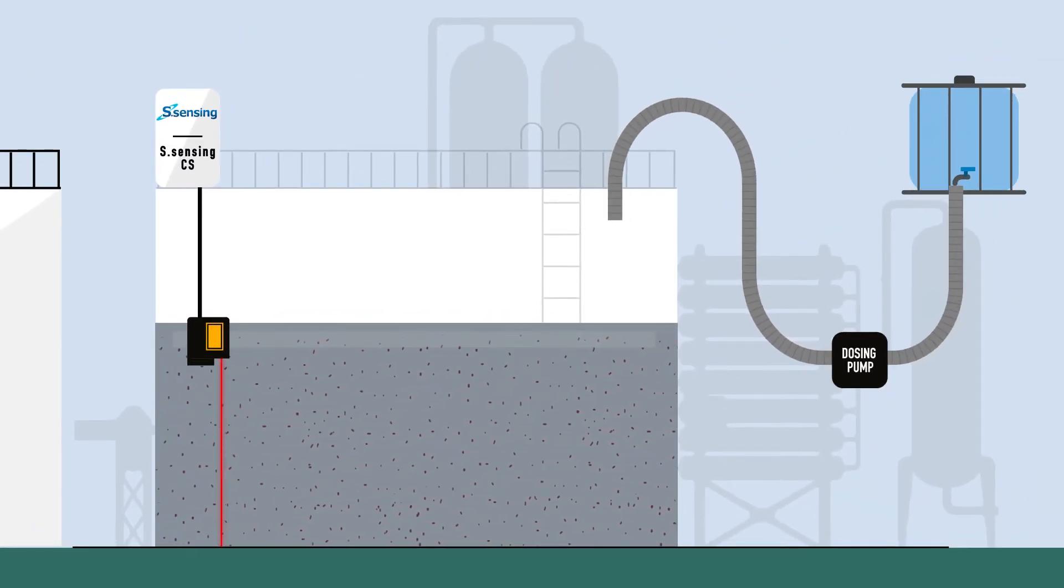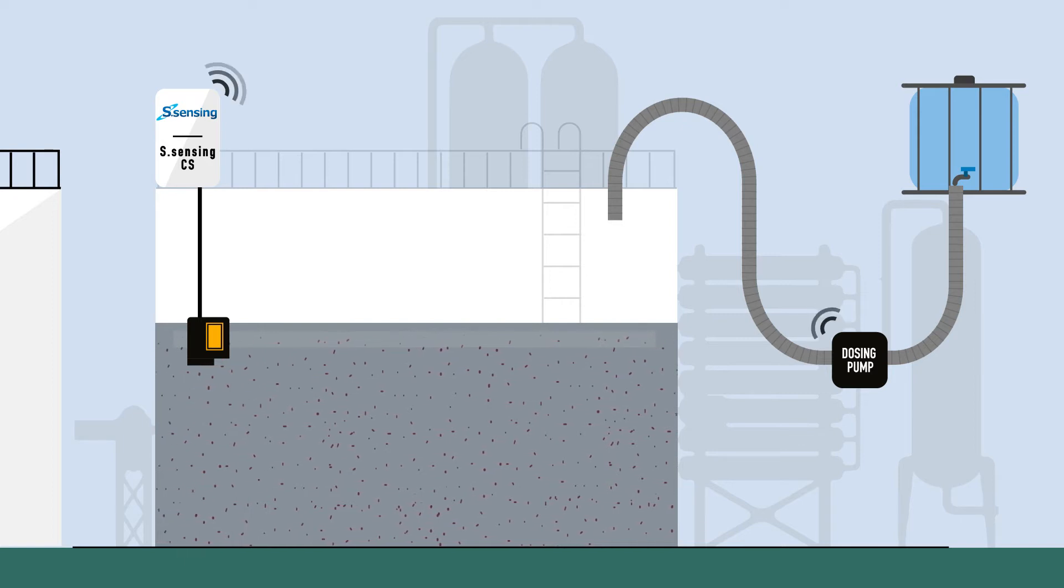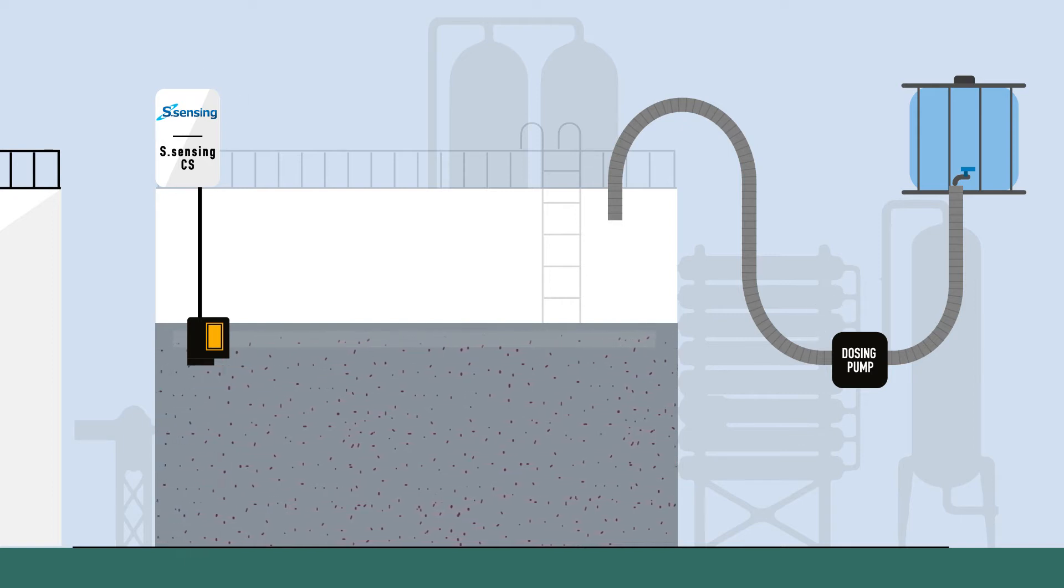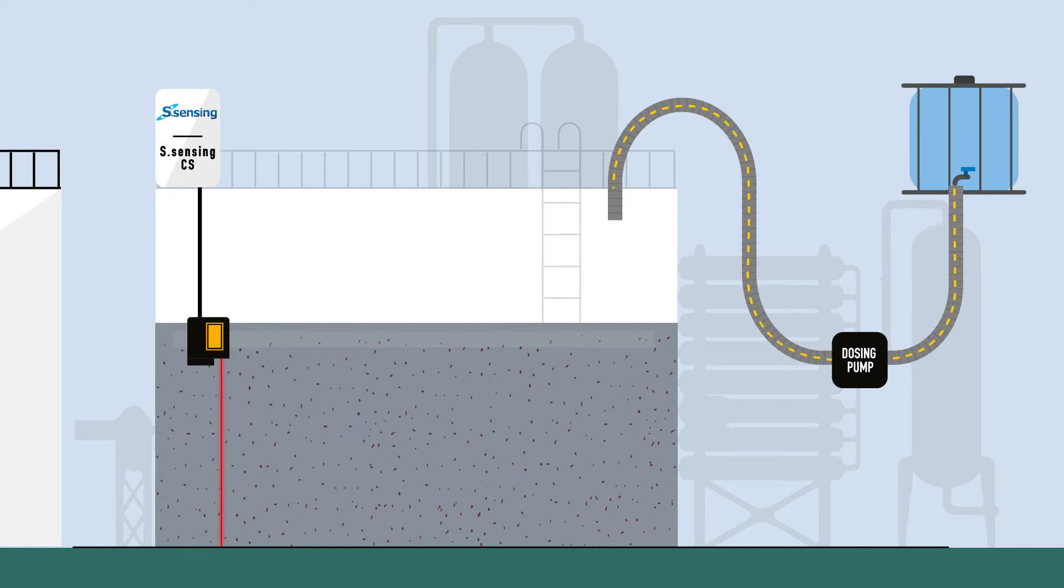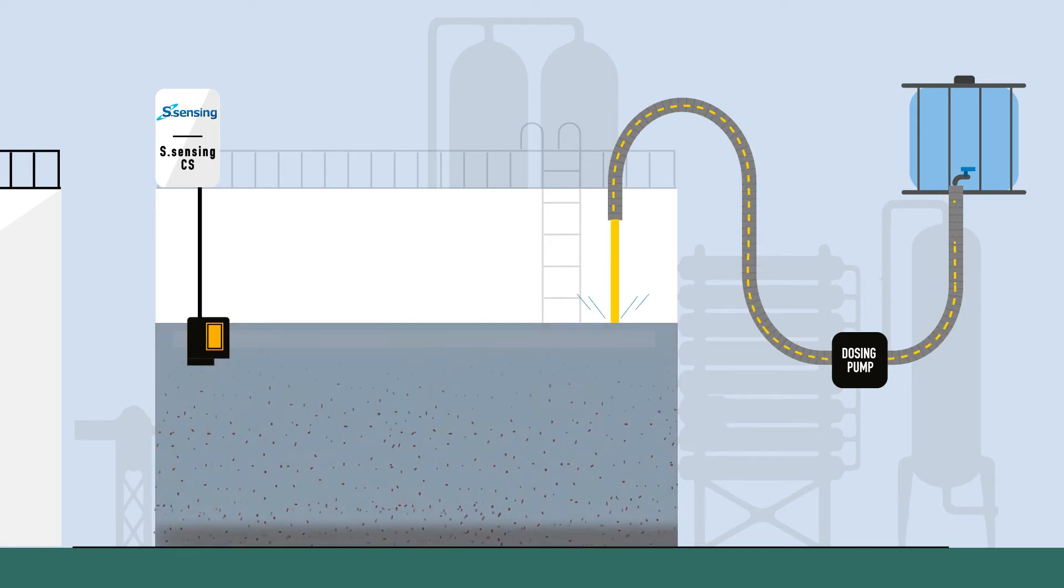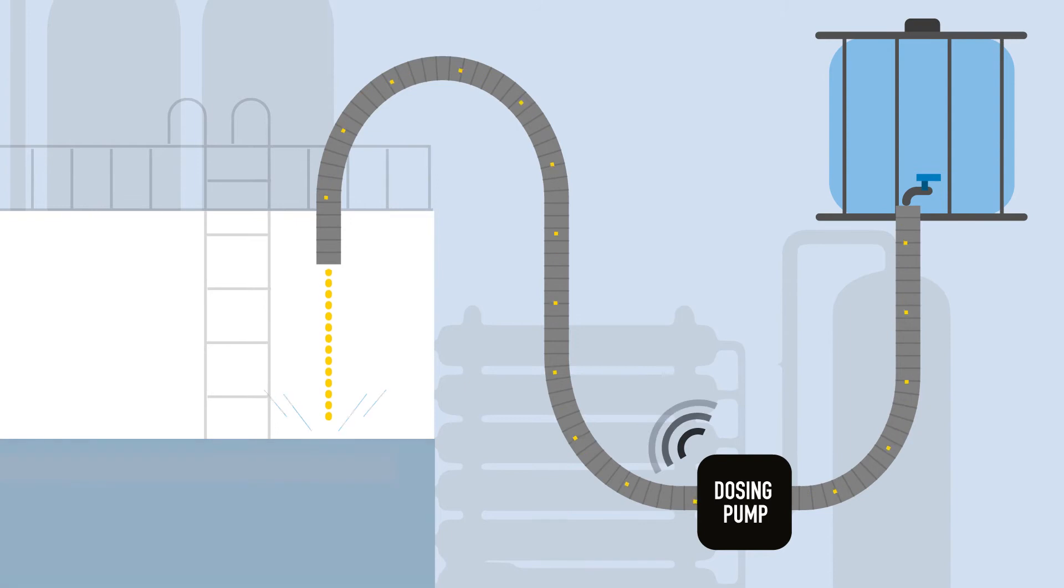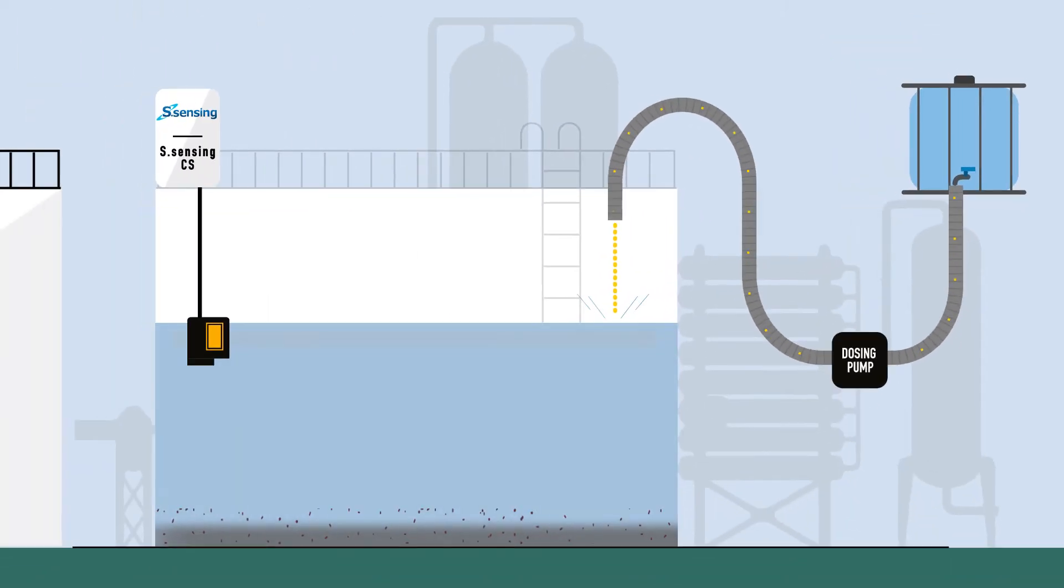The advantage of a continuous measuring of turbidity is that it enables the S-Sensing CS wastewater monitoring system to control the product dosage already with the data from the flocculation tank which means before the actual sedimentation process.